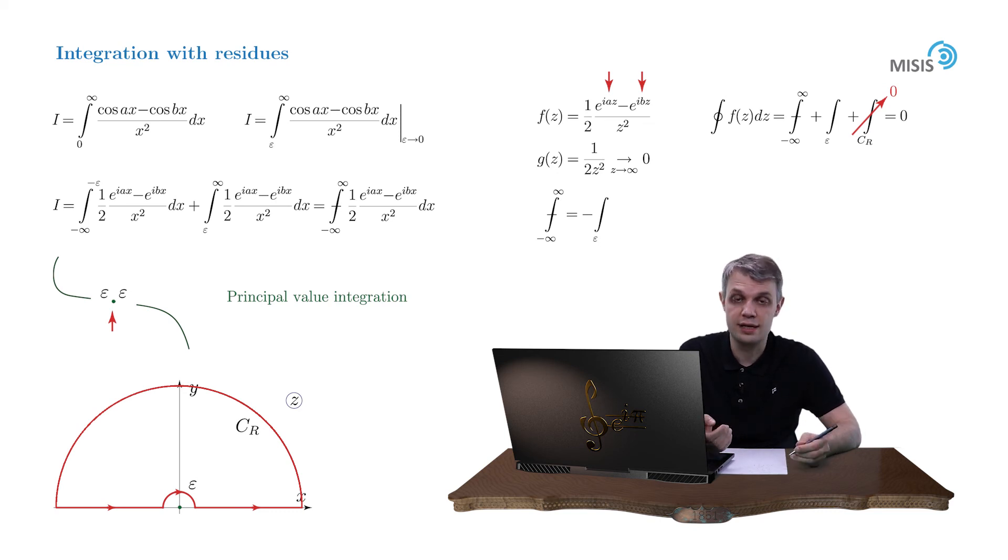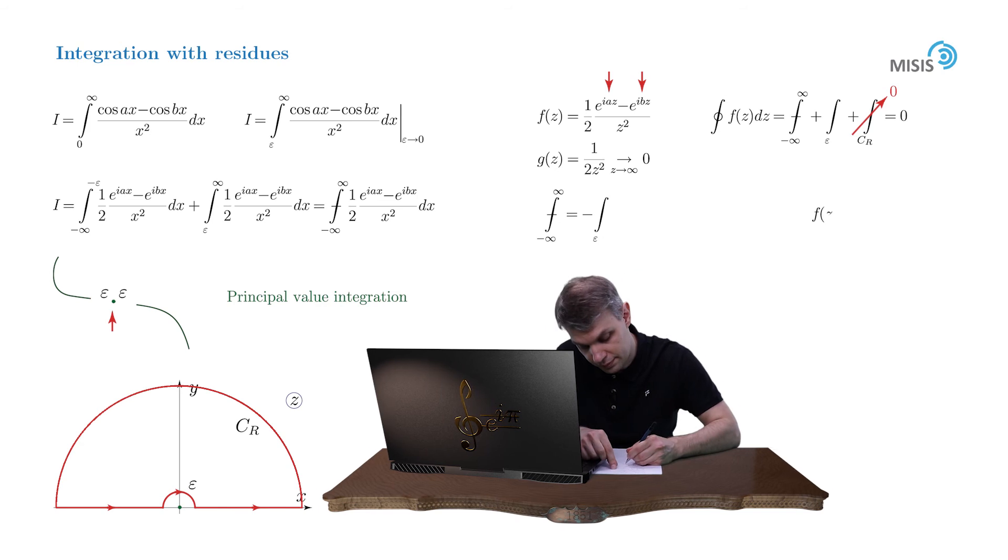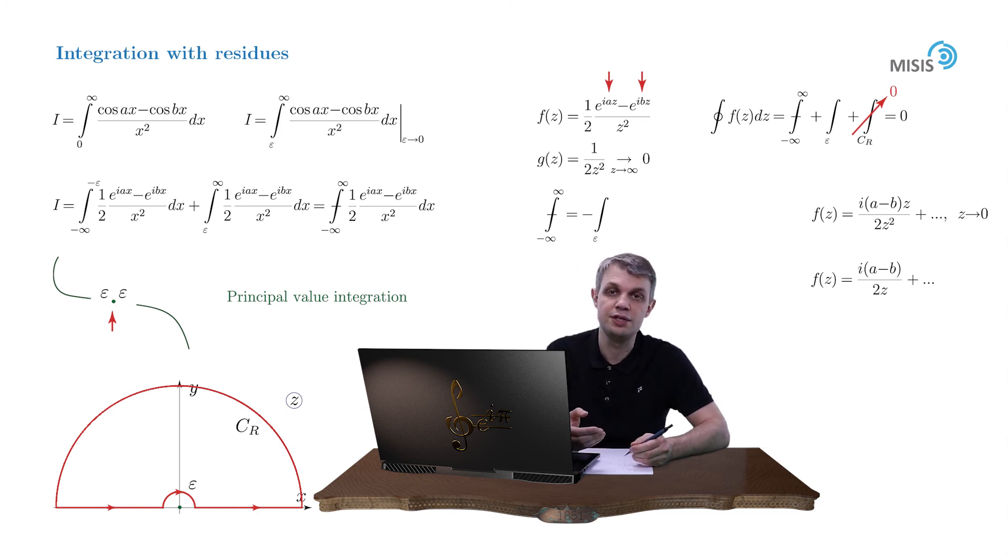And of course, this integral is way easier to compute, because we don't need the full function to do this, but just its Taylor series near the origin. So let us perform the Taylor expansion of our f of z function. The first term in the numerator was already obtained by us. It's ia minus b z over z squared, and so on. So our first term in the Laurent expansion of our function is i times a minus b over z, plus some regular terms. Now why don't I write these regular terms? Well, that's because when we integrate along this infinitesimal circle, they will vanish as the radius of this circle tends to zero. This way we only need singular terms, and there is only one of them, and it's what is written here.